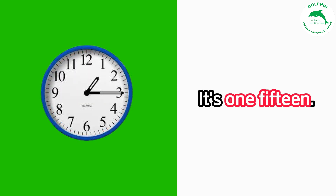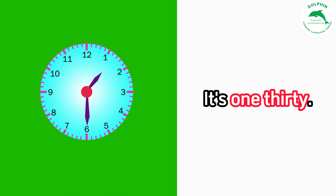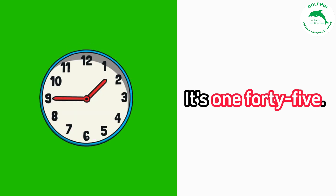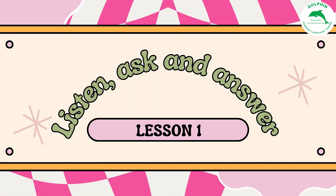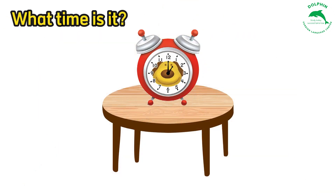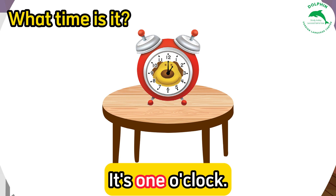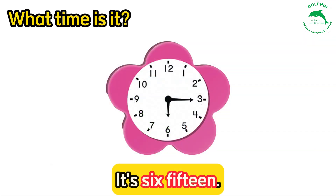Two: it's one fifteen. Three: it's one thirty. Four: it's one forty-five. Five: it's two o'clock. Listen, ask and answer. One: What time is it? It's one o'clock. Two: What time is it? It's six fifteen.